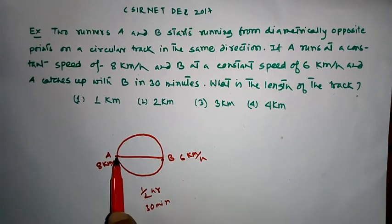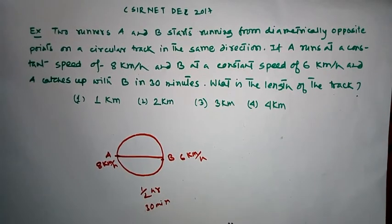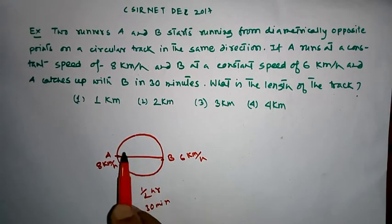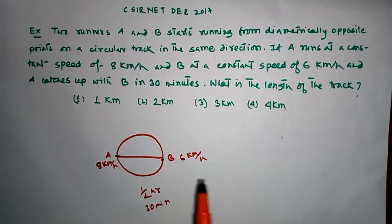We are asked to find the length of the circular track. Both A and B are running in the same direction.